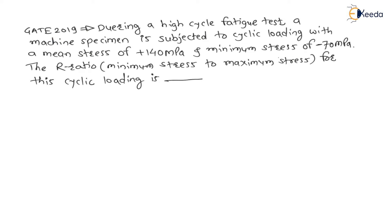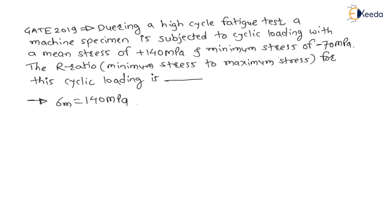The question is: during a high cycle fatigue test, a machine specimen is subjected to cyclic loading with a mean stress of 140 MPa. Mean stress sigma_m is 140 MPa. And minimum stress is minus 70 MPa — sigma_minimum is equal to minus 70 MPa, meaning it is compression.